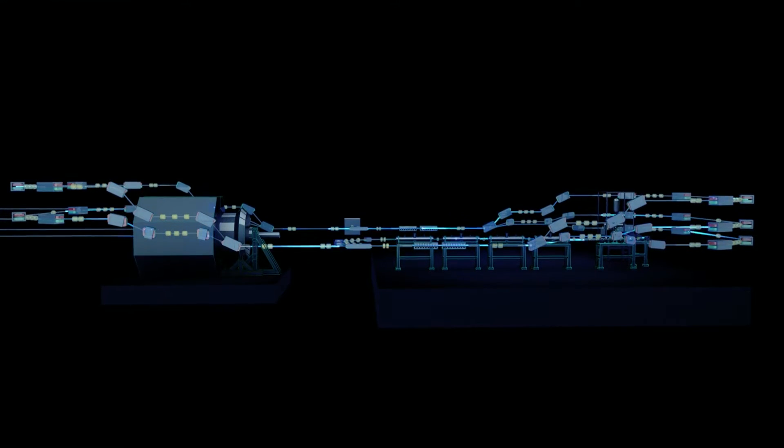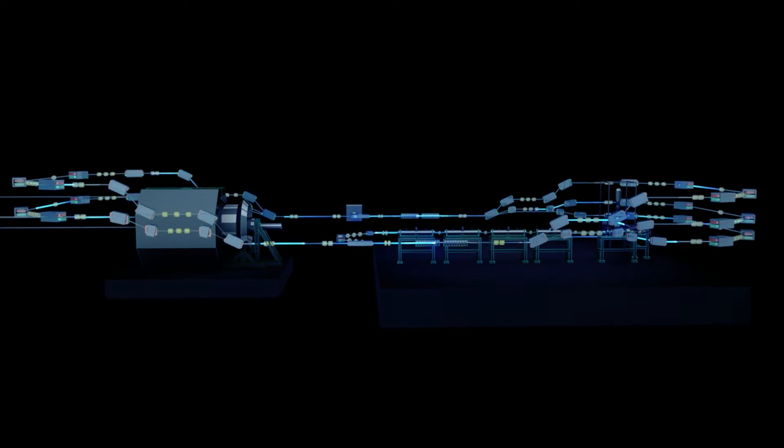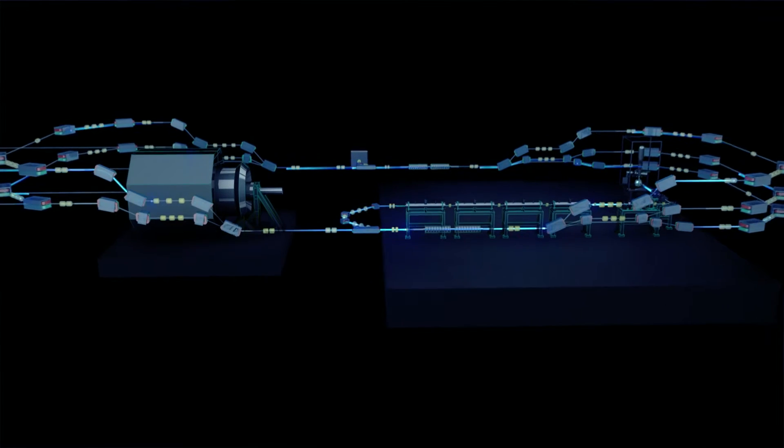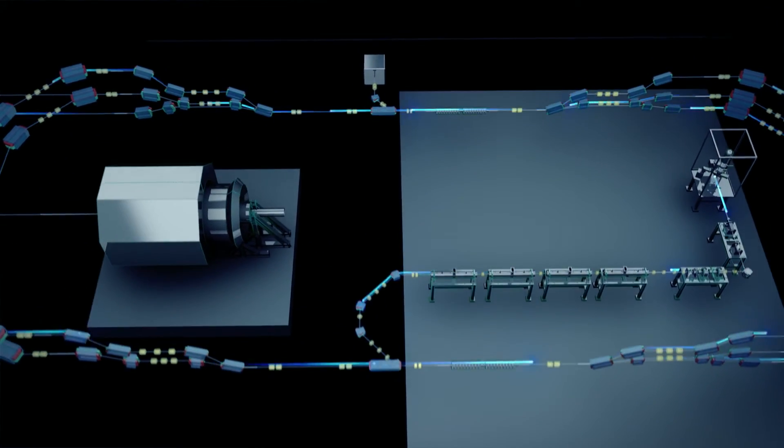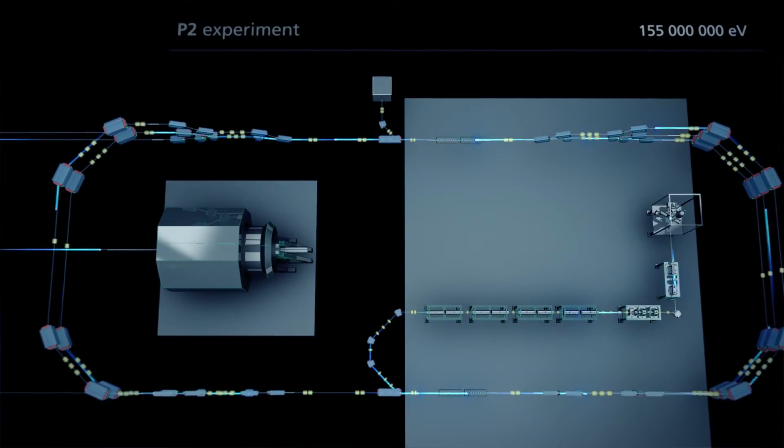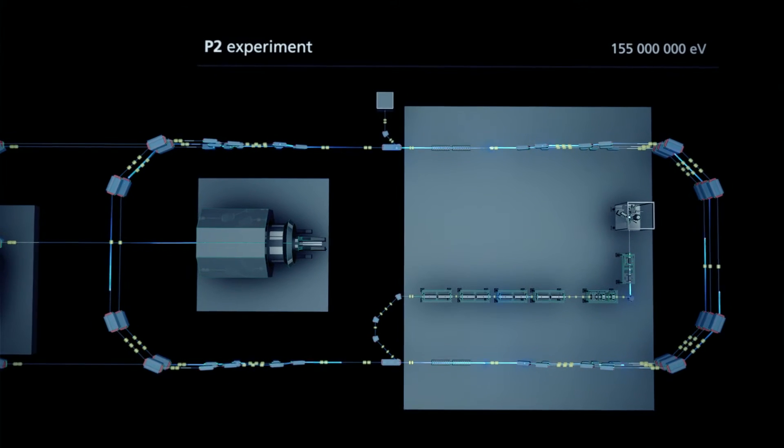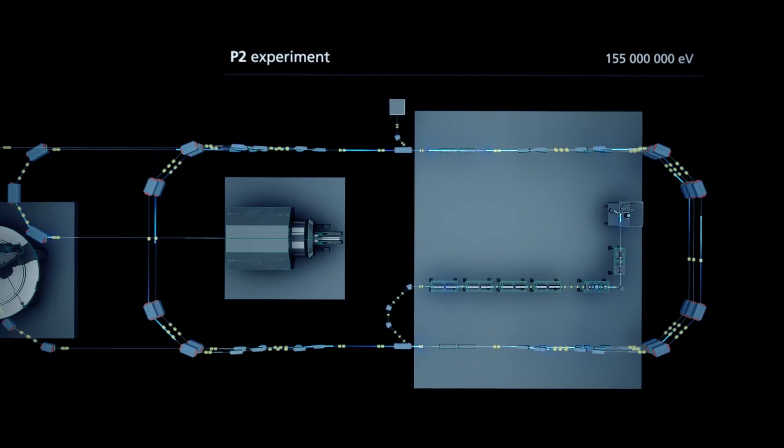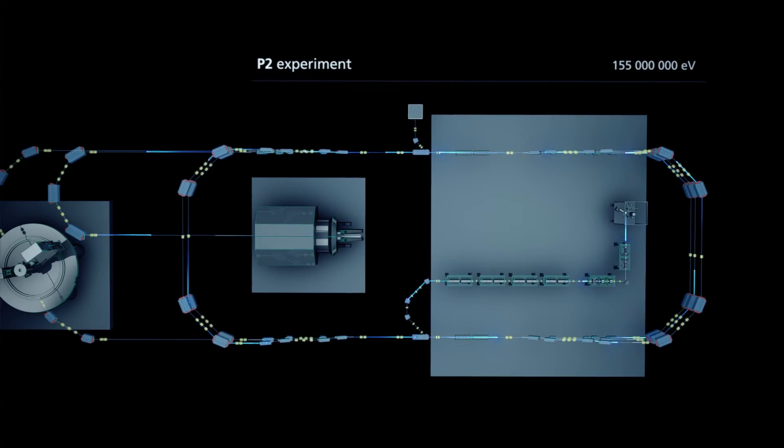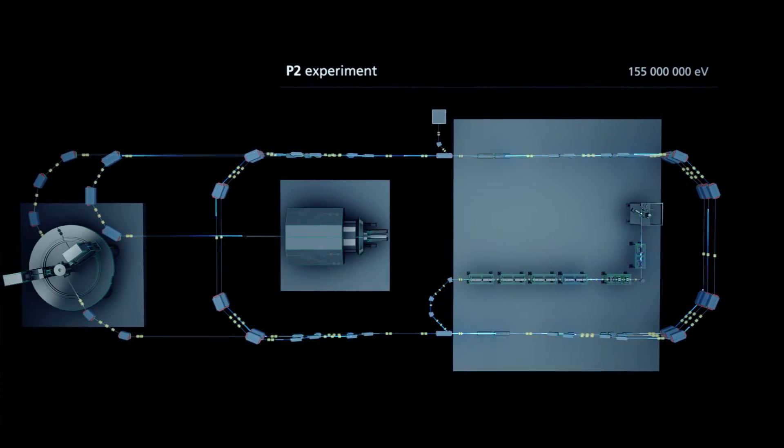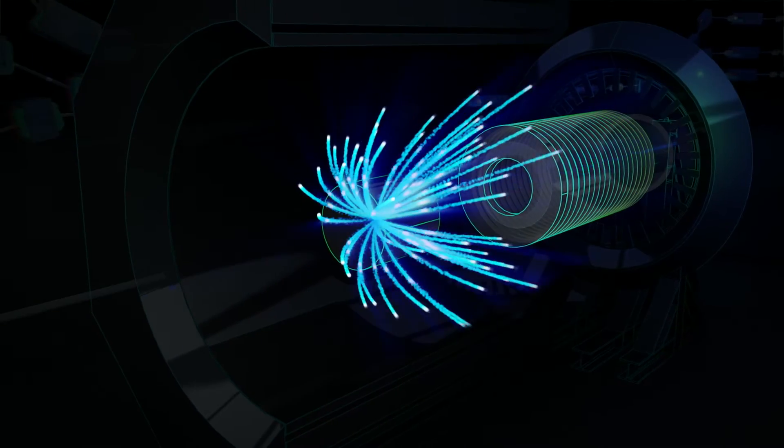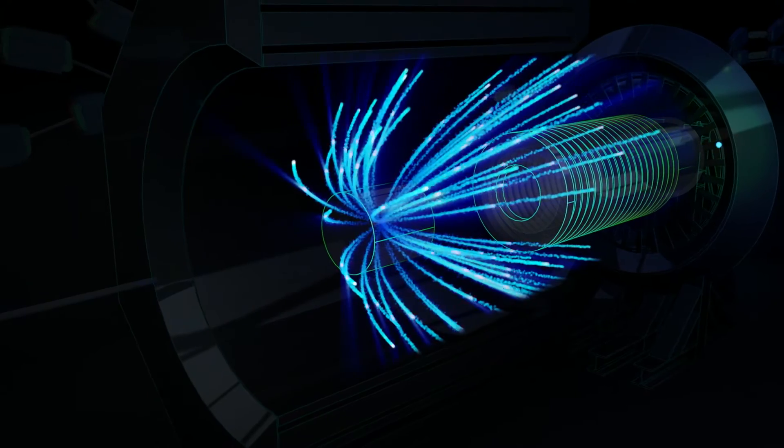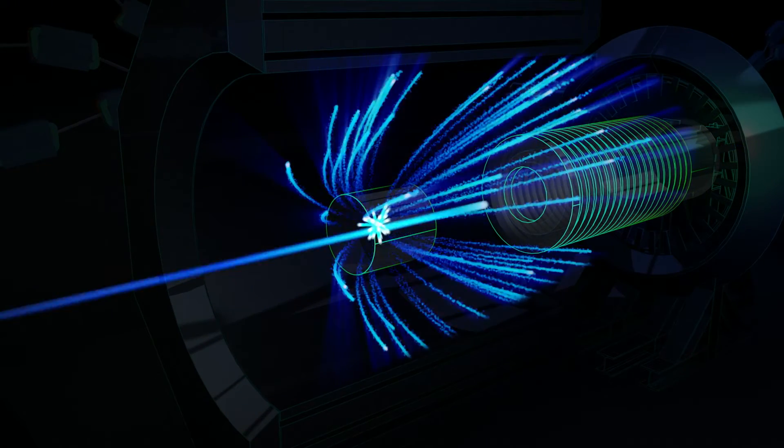MESA can operate in two different modes. For the so-called P2 experiment, the electron beam passes a third time through the two cryomodules and reaches an energy of 155 MEV. The beam is guided towards the P2 experiment after passing through the bottom arc. After the collision with a sample, the beam is dumped at high residual energy.